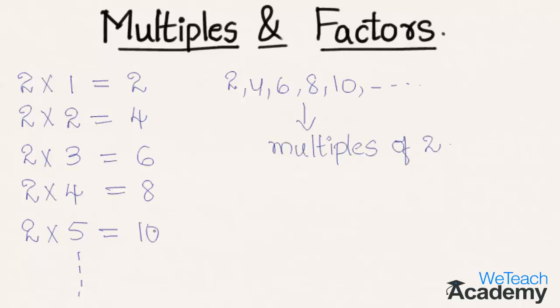And here we know that 2 into 3 is equal to 6. So 2 is said to be the factor of 6, and 6 is said to be the multiple of 2. So we can say that factor of 6 is 2 and the multiple of 2 is 6.